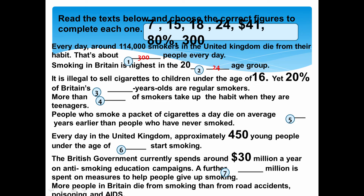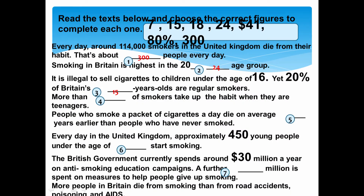Yet — مع ذلك — 20% of British 15-year-olds — تقريباً 20% من المدخنين الذين هم تحت سن الـ 18 — are regular smokers — هم مدخنون منتظمون. More than 80% of smokers take up the habit — تعودوا على عادة التدخين — when they are teenagers — عندما كانوا مراهقين. ملينا هذا الفراغ بـ 80%، لأن عندنا 100% وأُعطينا 20% ما تبقى هو 80%.